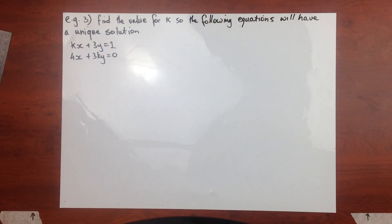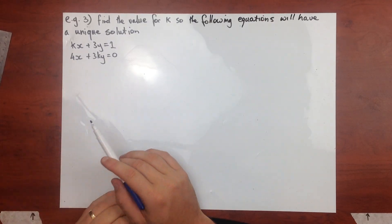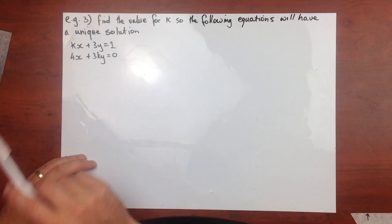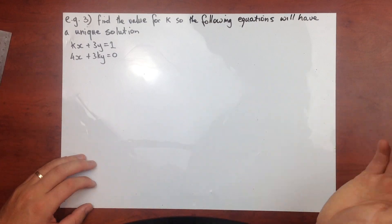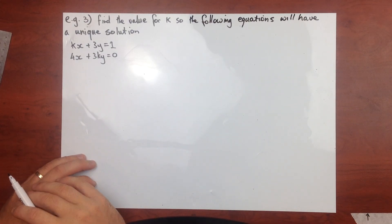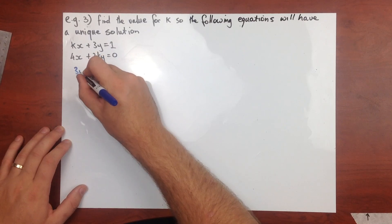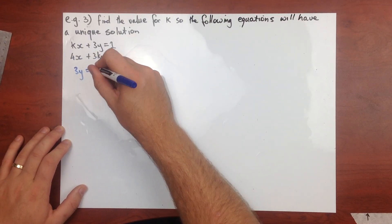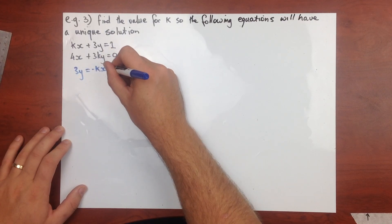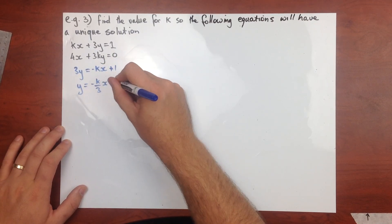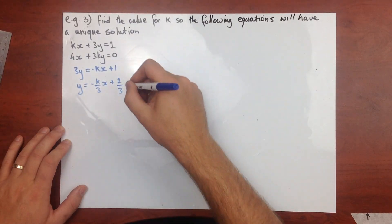Example three: find the value of k so that the following equations have a unique solution. We need to look at the gradients — the coefficients of x — to determine this. We rearrange both equations into the form y equals mx plus c. For the first equation: y equals (negative k over 3)x plus (1 over 3).